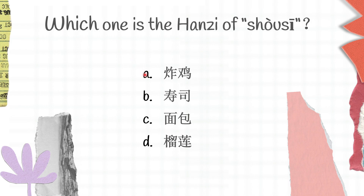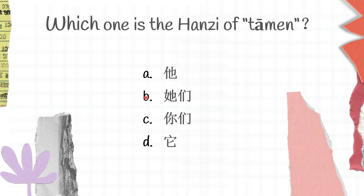A is zhájī, B is shòusī, C is miànbāo, and D is liúlián. The right answer for this question is B. The next question: which one is the Hanzi of 'tāmen'? Which one do you think is the right answer?